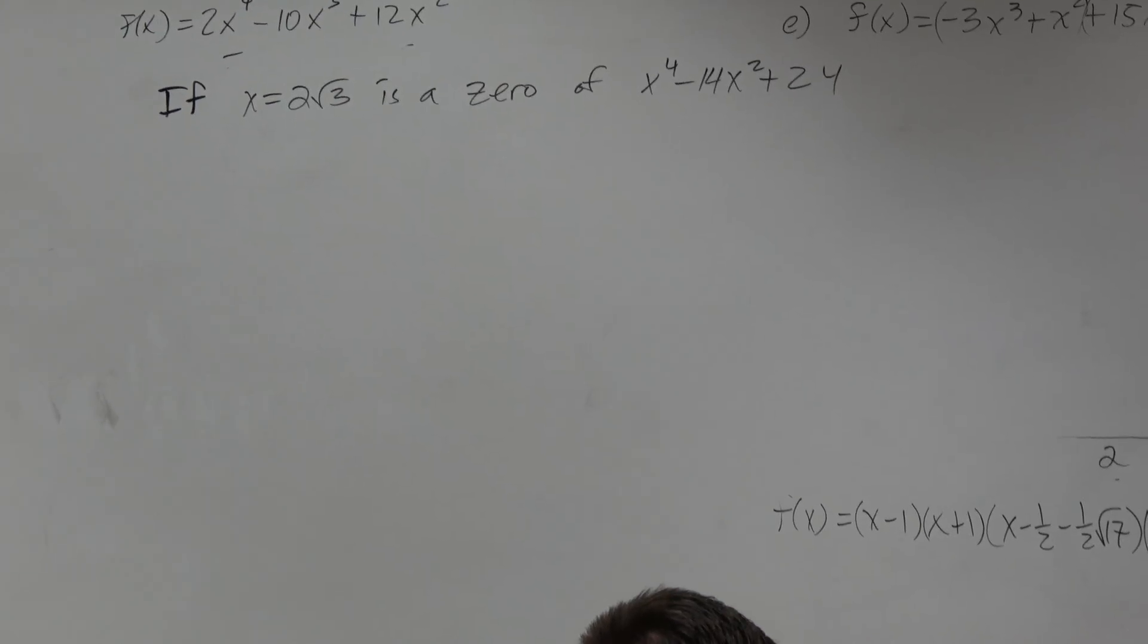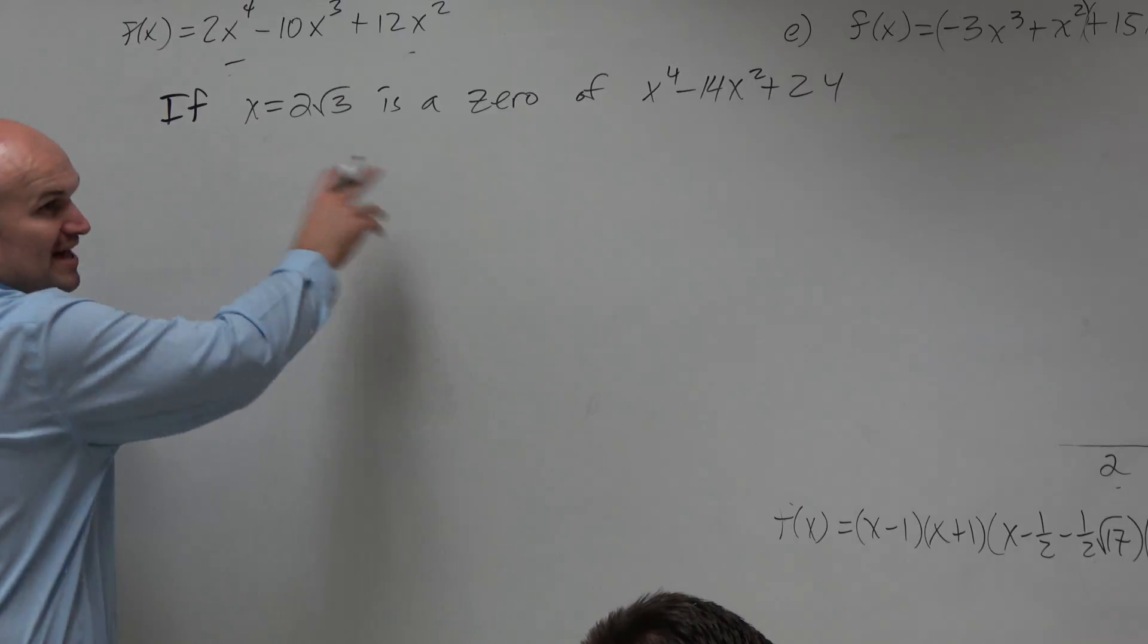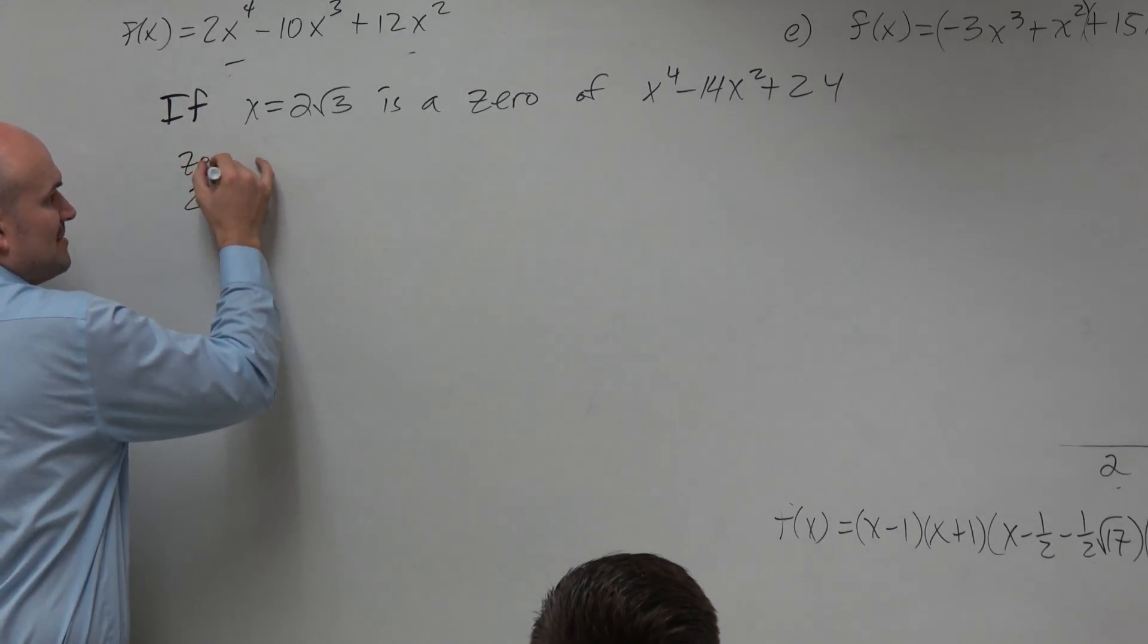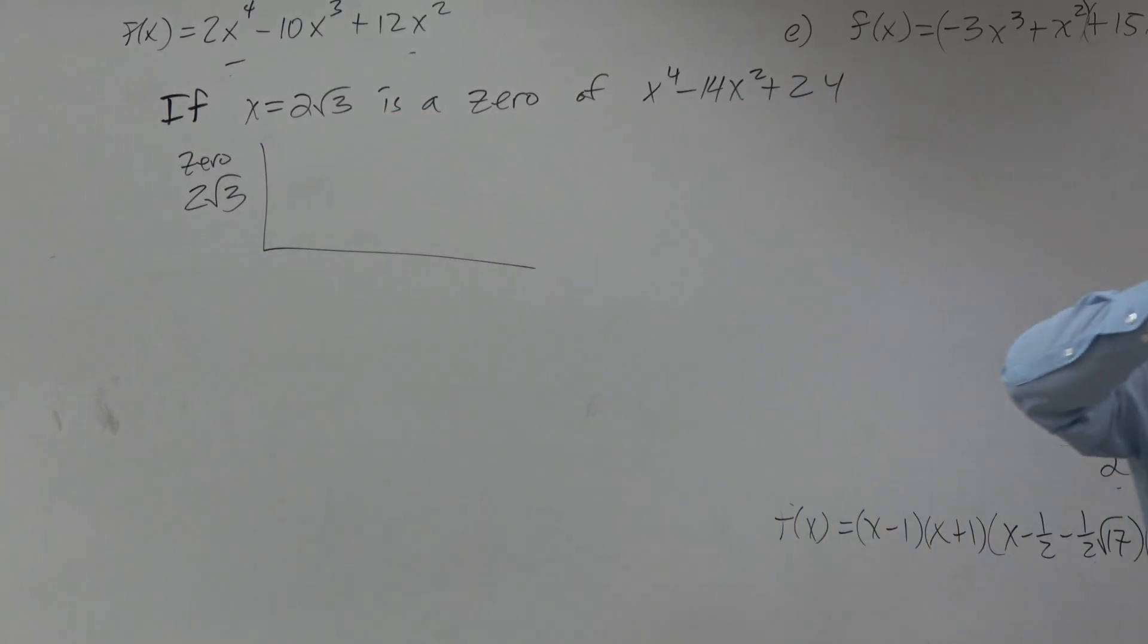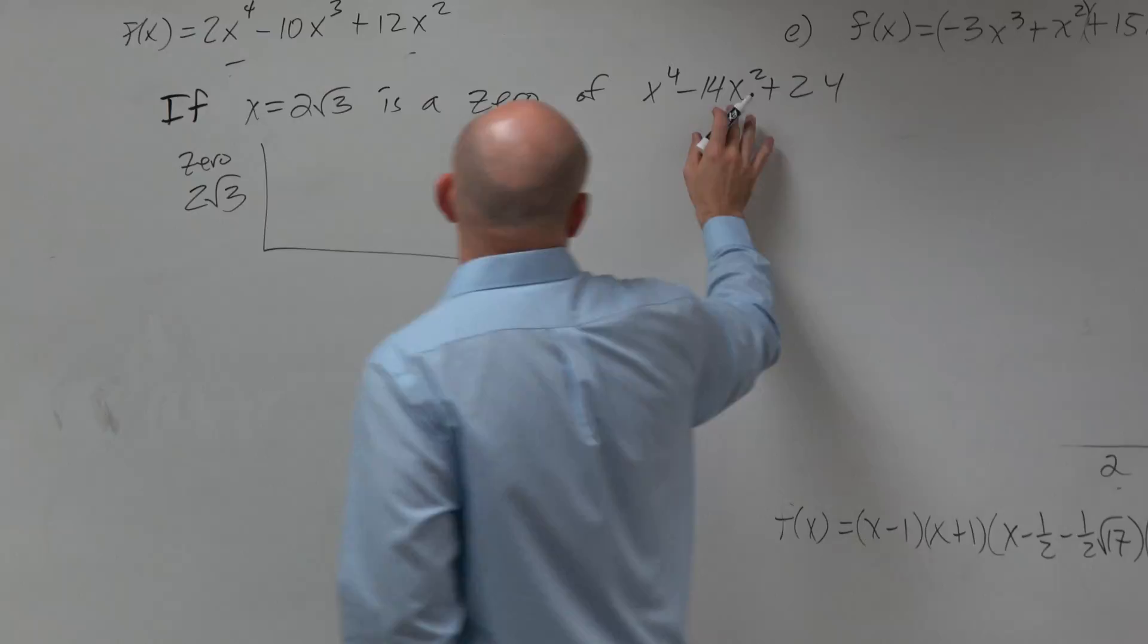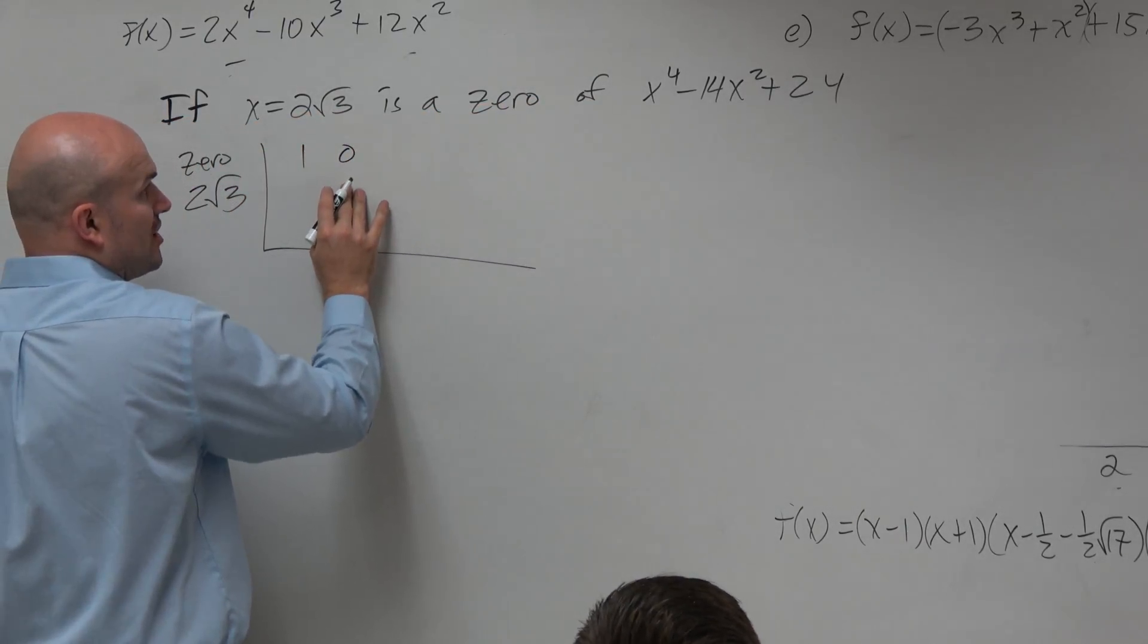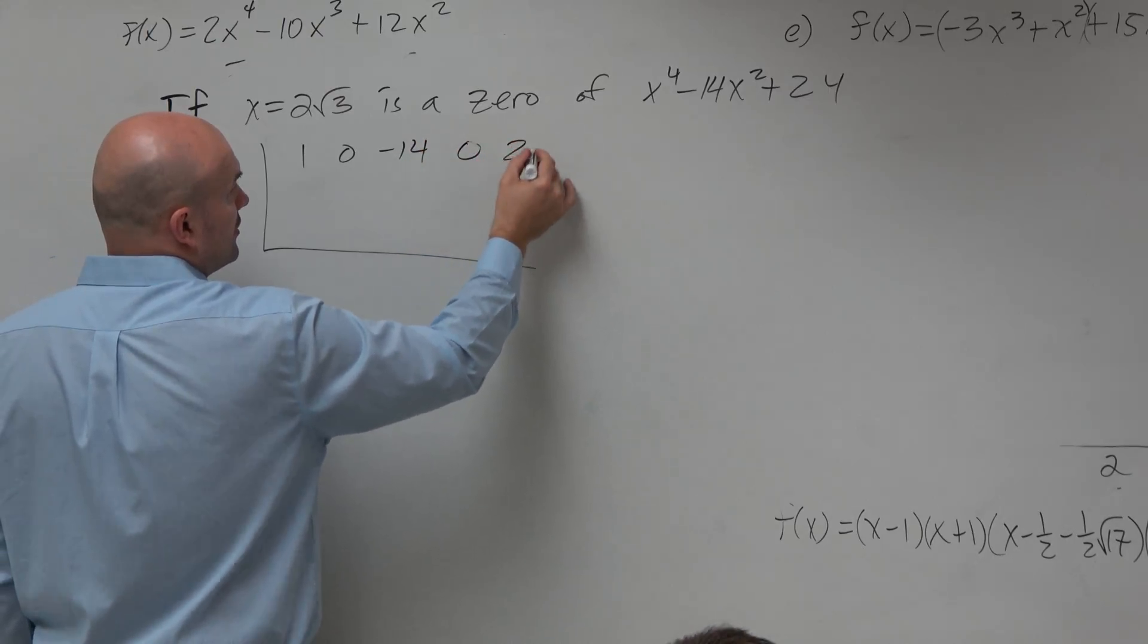Given a zero, you do synthetic division. That's how you set up synthetic division. So we do 2√3, that's my zero. Then you take the coefficients. Now remember, when you're doing synthetic division, you have to include your place value. So we don't have an x³, so we have to use 0. Negative 14, don't have an x, have to use 0. 24.